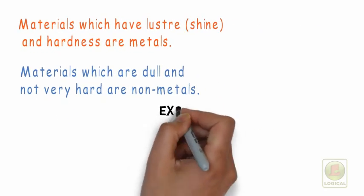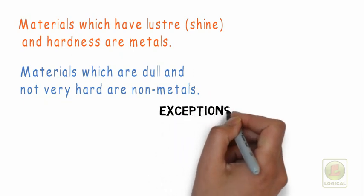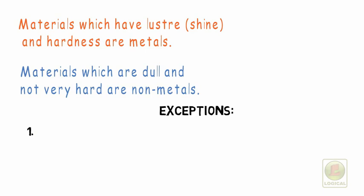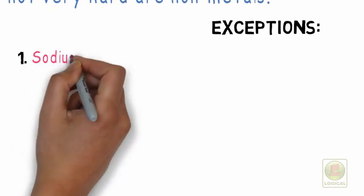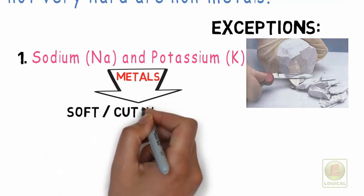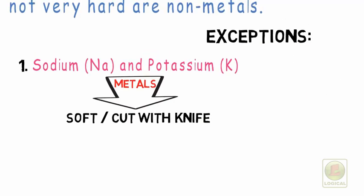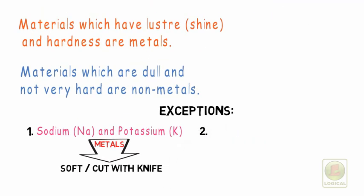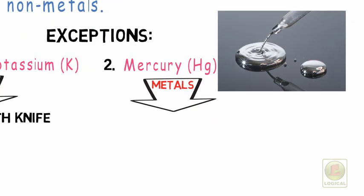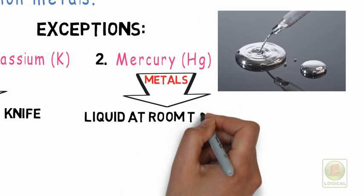But friends, there are some exceptions. Number one: materials like sodium and potassium are metals, but they are soft and can be cut with a knife. Number two: mercury is the only metal found in liquid state at room temperature.